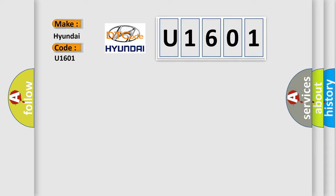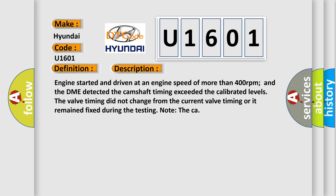The basic definition is Camshaft control circuit ground. And now this is a short description of this DTC code. Engine started and driven at an engine speed of more than 400 RPM and the DME detected the camshaft timing exceeded the calibrated levels. The valve timing did not change from the current valve timing or it remained fixed during the testing.